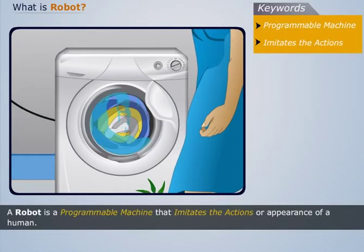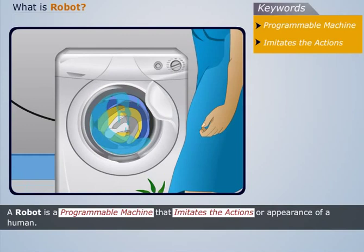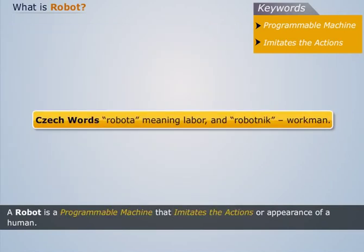Hence, a robot is a programmable machine that imitates the actions or appearance of a human. The term robot is made from Czech words robota meaning labor and robotonic workman.